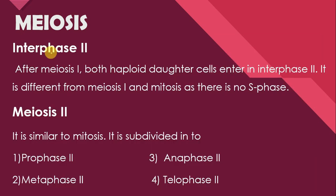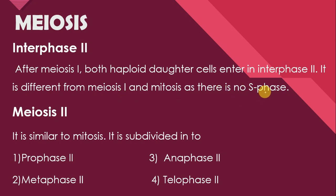After the formation of two haploid cells as a result of Meiosis 1, each cell enters into Interphase 2. Interphase 2 mitosis aur Meiosis 1 ke interphase se is sense mein different hota hai ke is mein S phase present nahi hota. S phase cell cycle ka wo phase hai jis mein chromosomes ki duplication hoti hai, but Interphase 2 mein duplication of chromosomes required nahi hoti. So S phase is absent in Interphase 2.